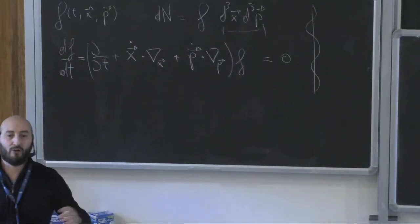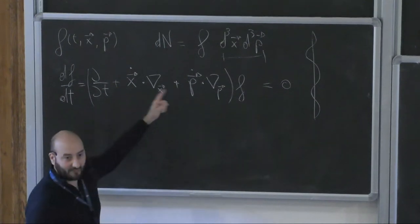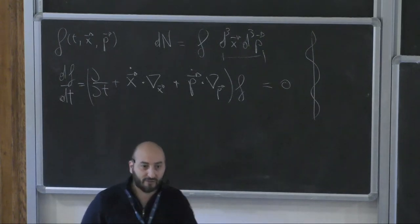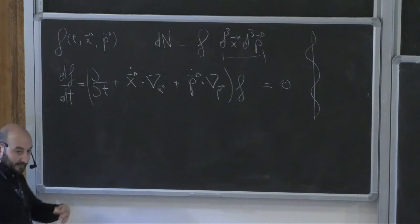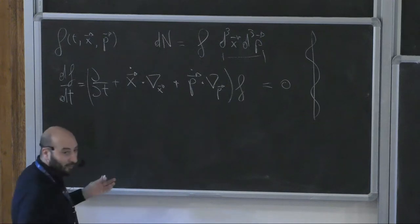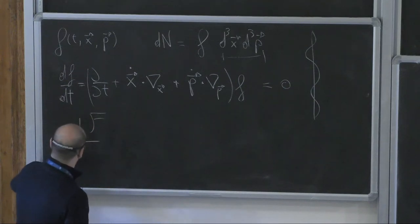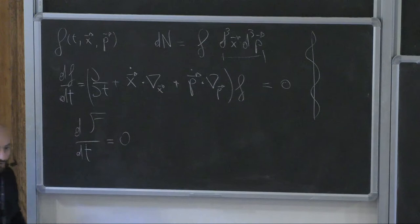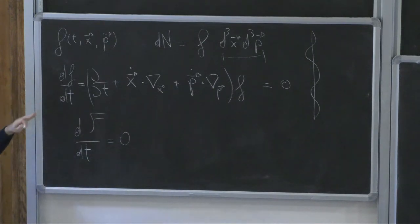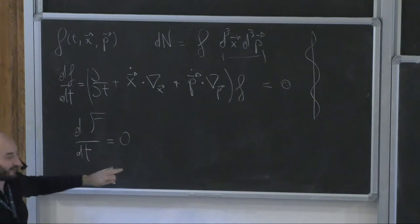An ensemble of N particles is described by the positions and conjugate momenta of all N particles. It is true in Hamiltonian mechanics that the N-particle distribution function obeys this equation, where the derivative is over all N-particle coordinates. This is true as long as f obeys Hamiltonian dynamics, which is equivalent to saying you have conservation in phase space — a volume of initial conditions maps into a conserved volume in symplectic space.